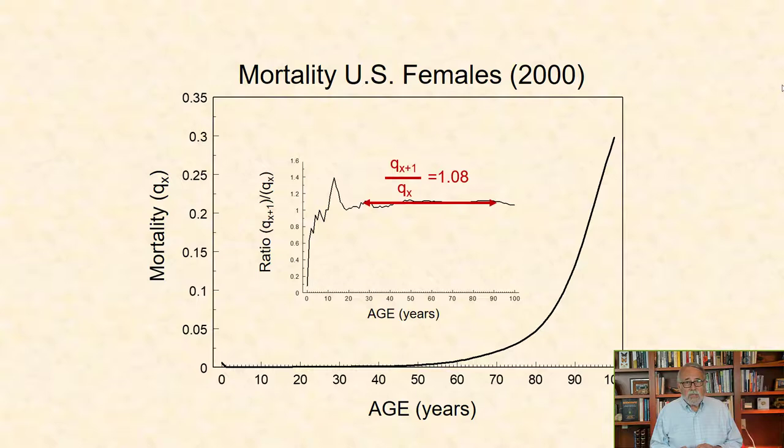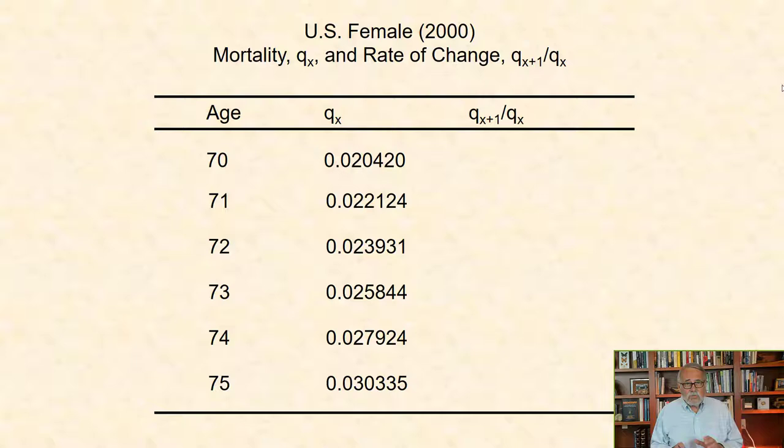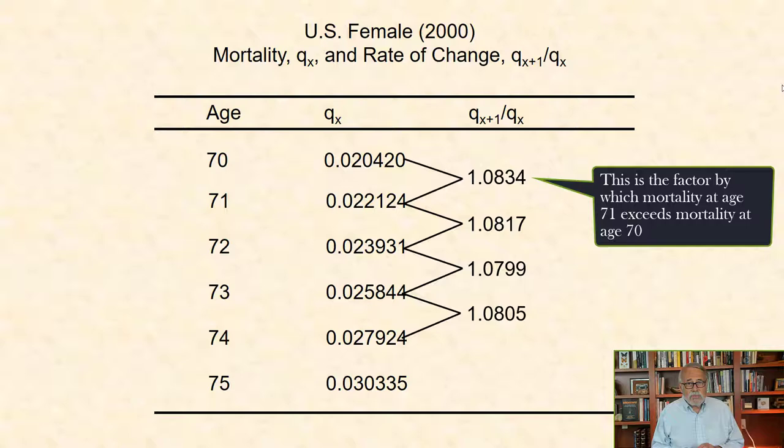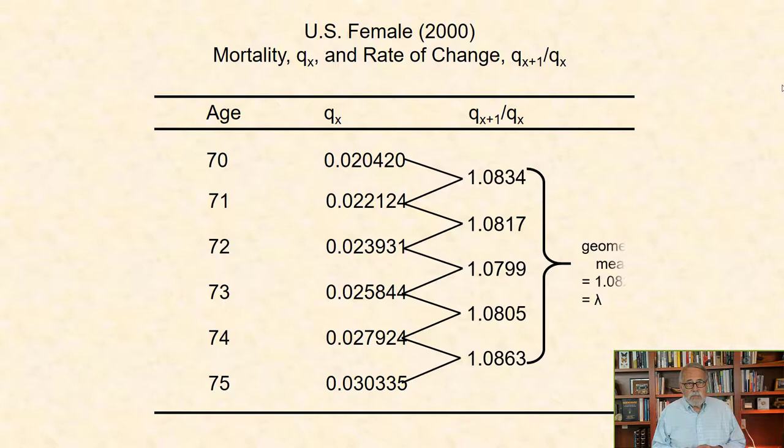By taking a close look at mortality at each age from 70 through 75, as shown in the second column of this table, we see that the ratios of mortality for 71 to 70, 72 to 71, 73 to 72, and so forth, are all very close to 1.08, that we will define as lambda, for reasons that will be clear shortly. In other words, we can predict with a high degree of accuracy the mortality of one age using the product of 1.08 and the mortality at the previous age.